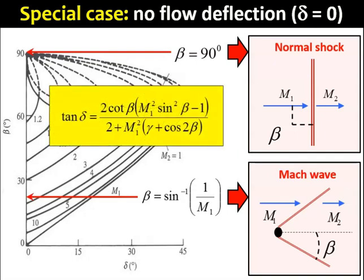And for both cases, if you plug back either values of beta into the tangent delta equation here, you'll definitely get back delta equals to 0.